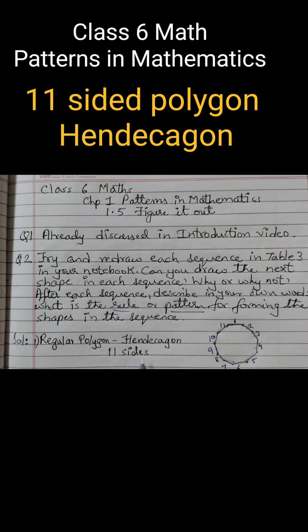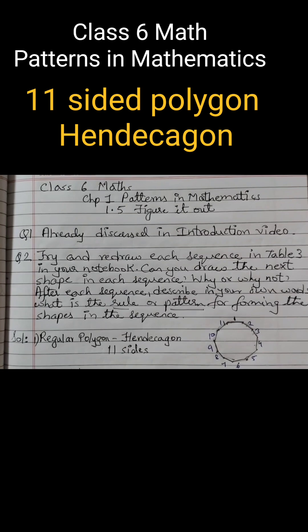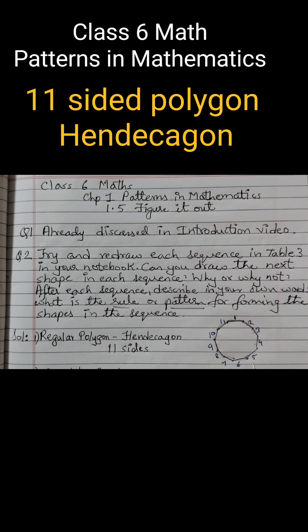So we got 11 sides, that's a hendecagon. That's the easiest way you can draw it. Draw a circle, mark the points, and then draw the line segments.